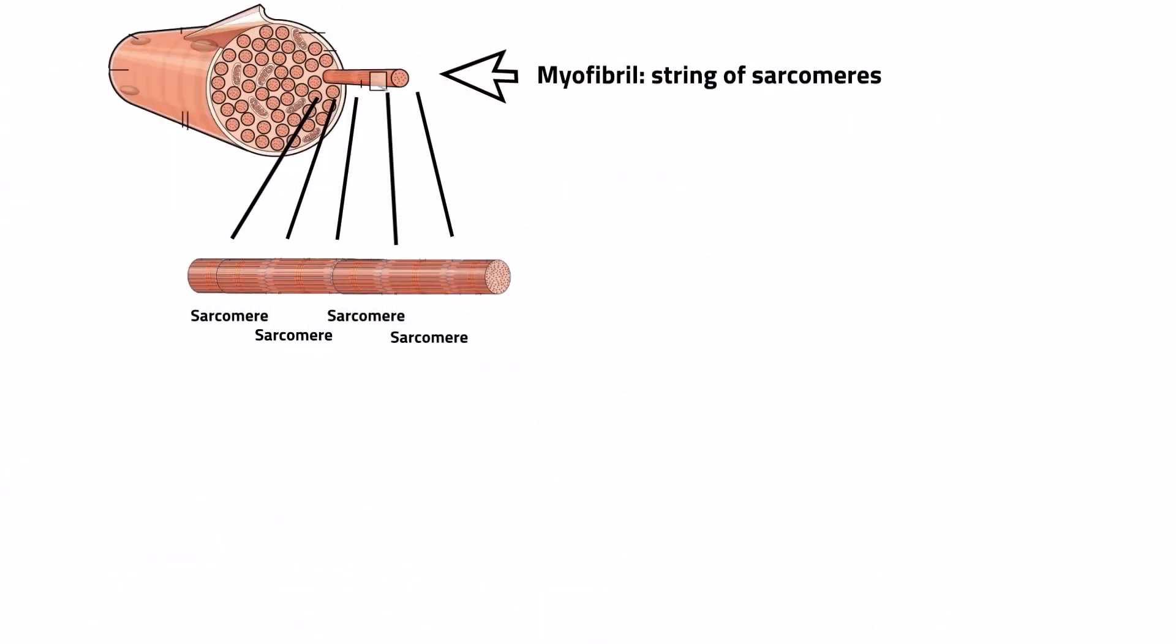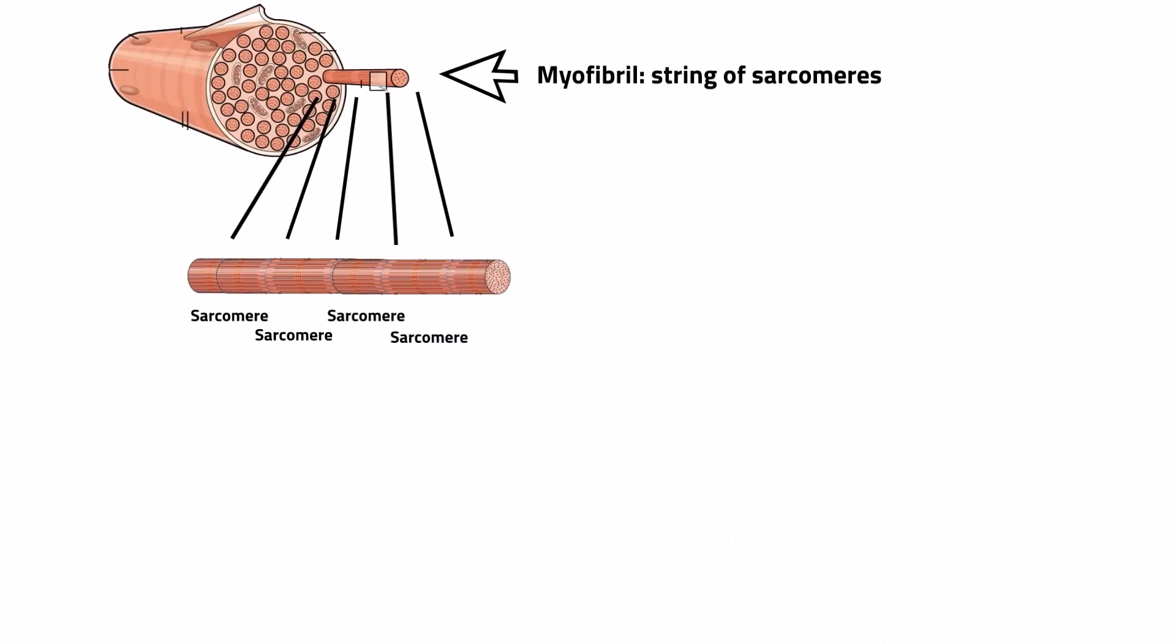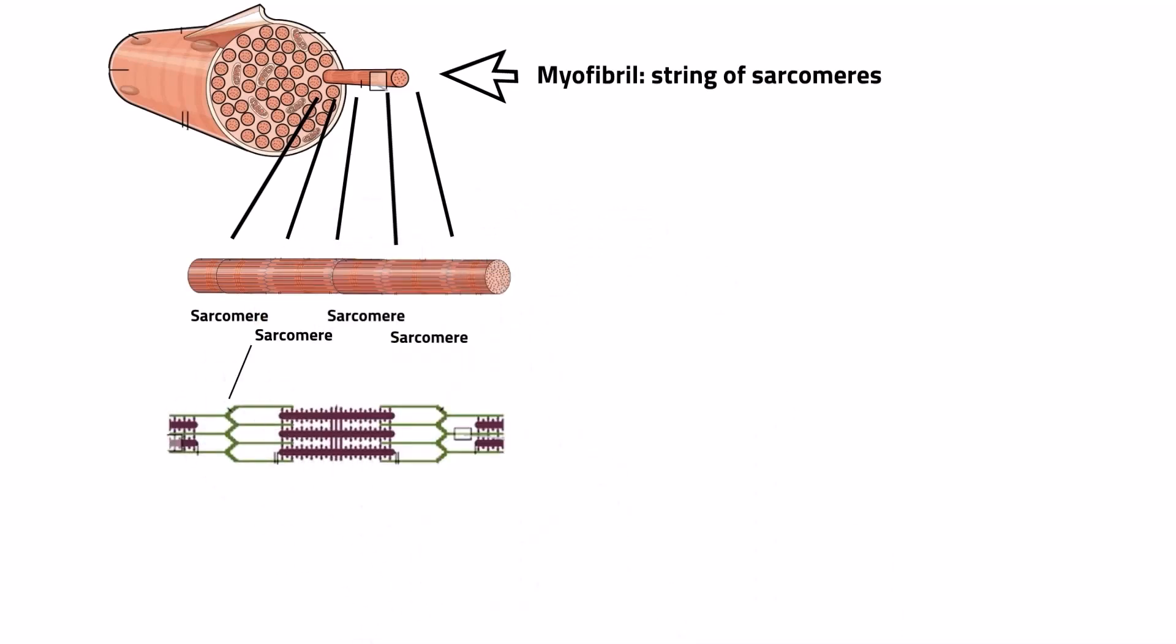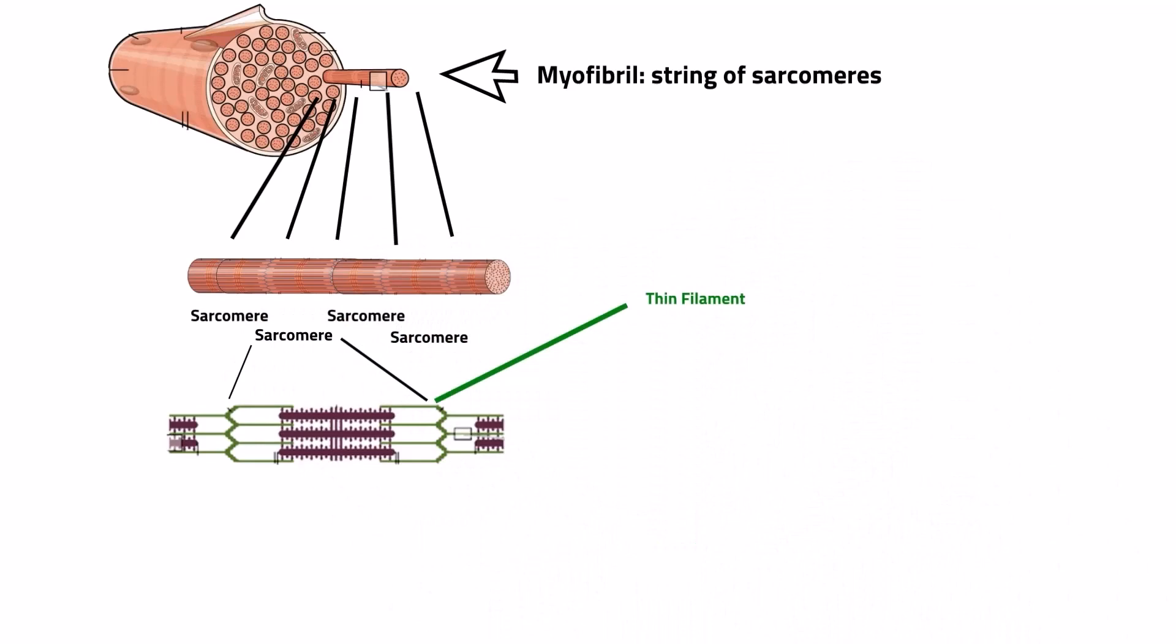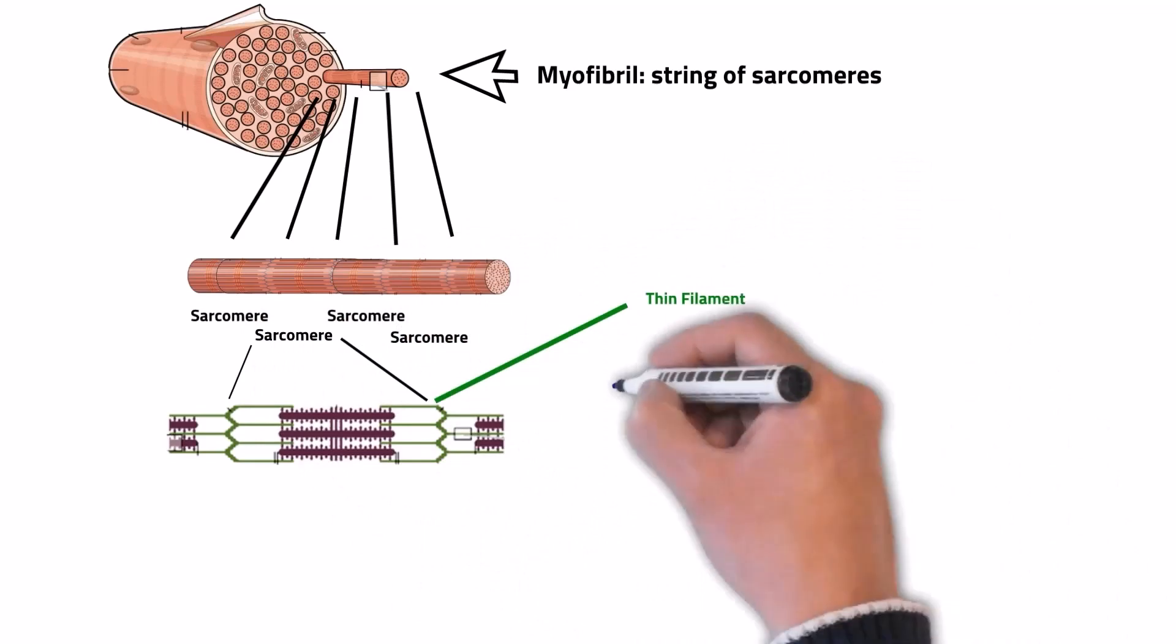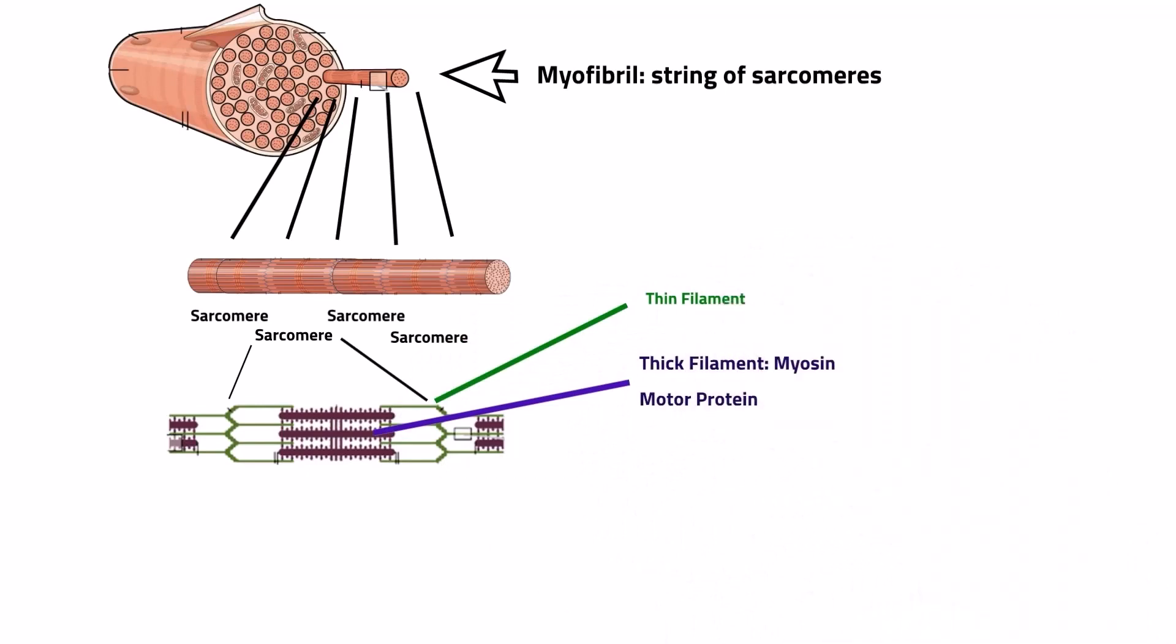So starting with the myofibril, we see it's a string of contracting units called sarcomeres. Each sarcomere is made of thin filaments, shown here in green and attached to the end of the sarcomere, and thick filaments in purple, and these are made of the motor protein called myosin.